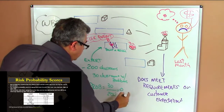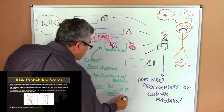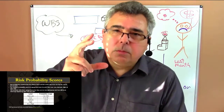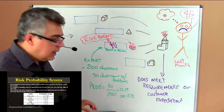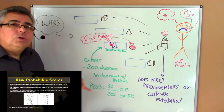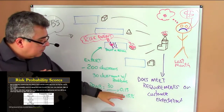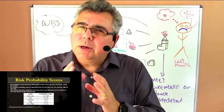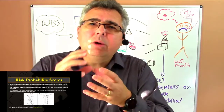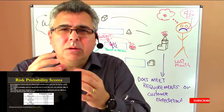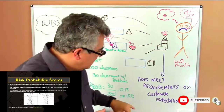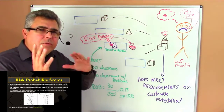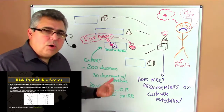That would be 0.15 — something around 15%. So you can use that interview to understand the probability. Based on that, you can make some decisions. What we try to do here is give a numerical scale for the probability. In some places we work with probability in percent, but mostly it's better if you can classify that according to the project.